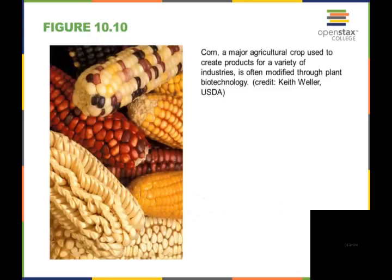Corn is a major agricultural crop and a variety of industries use it. It has been modified tremendously through plant biotechnology. Some of these types of corn you would never even see. What you're used to probably seeing is this type of corn. But there were several other types of corn that used to exist. We do just grow a few varieties now that have been genetically modified to meet our needs.